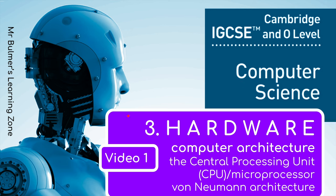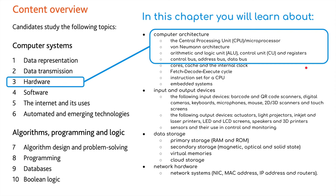Welcome back everybody. This is the first video for the third topic, the topic being hardware to support the IGCSE computer science from Cambridge. We'll be covering the central processing unit, the CPU, the microprocessor, and we'll be looking at von Neumann architecture in general. We will also look at the logic unit, the ALU, the control unit, and some of the registers — things inside the CPU. We'll look at the control bus, the address bus, and the data bus. This is part one of computer architecture, and we will finish this in video two.